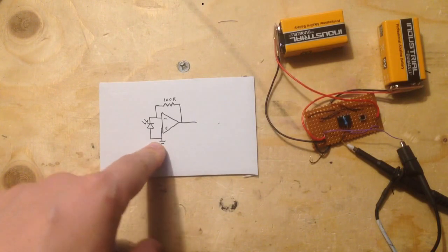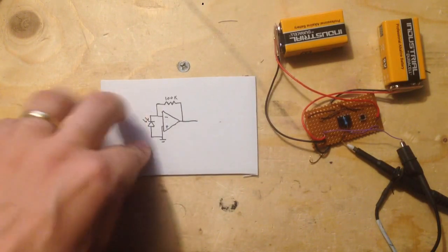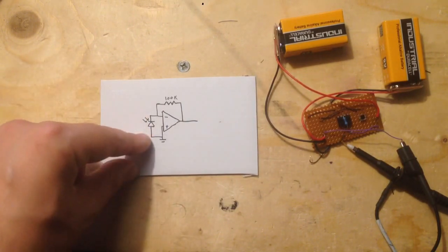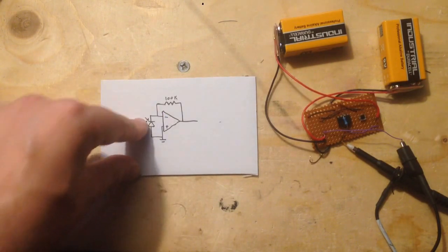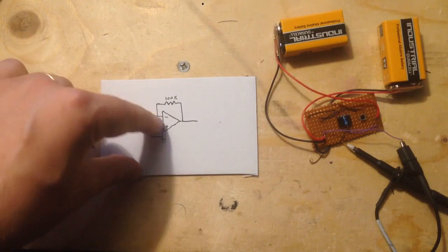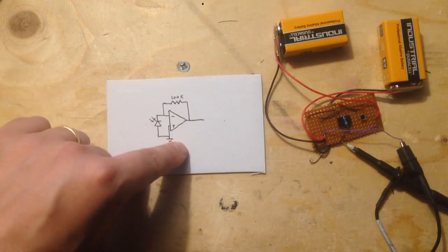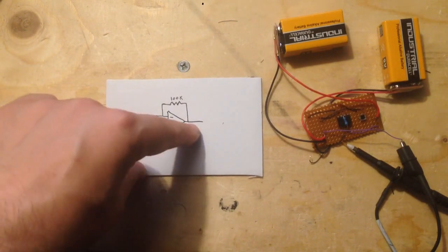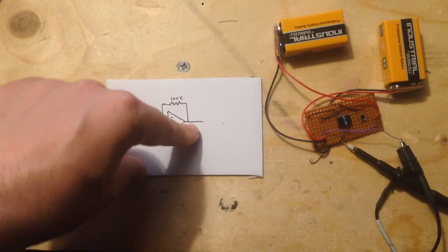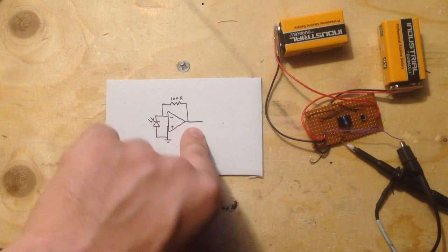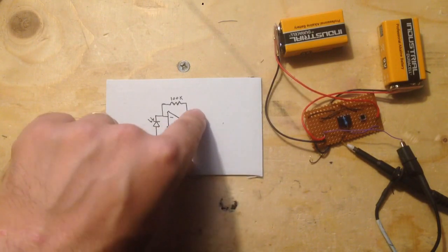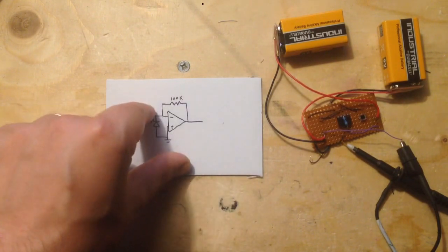What happens is that when you get current produced by the photodiode, it goes into the negative input. And that makes the output swing in the opposite direction to counteract that. So it produces a current going through the feedback resistor.